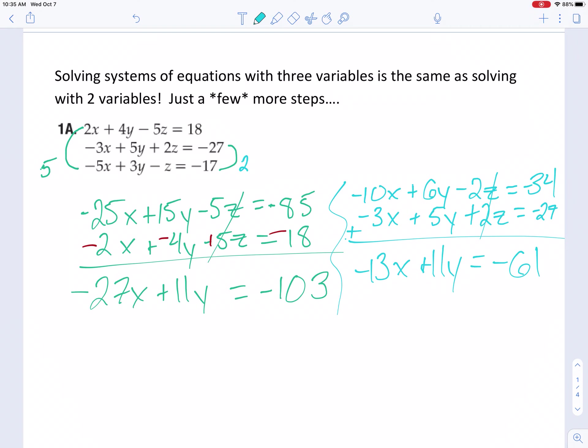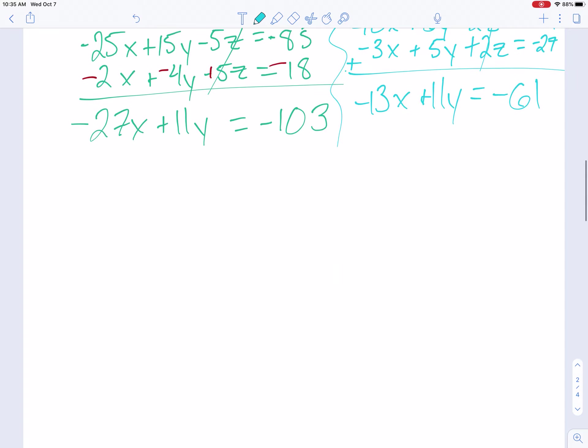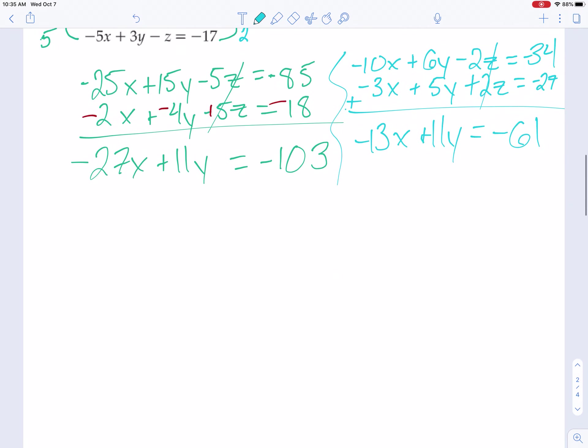The reason I knew to combine those the way I did was because I was trying to get one variable to cancel. So by combining in different ways, I've now ended up where I have two equations, and neither one have a z, and what's even better is it looks like I have 11's the same, so that's pretty cool.